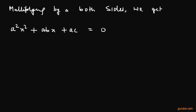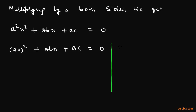Now, we shall write the term A squared X squared as (AX) whole square. So we have (AX)² plus ABX plus AC equals zero. Let us look at the identity: P² plus 2PQ plus Q² equals (P plus Q) whole square.